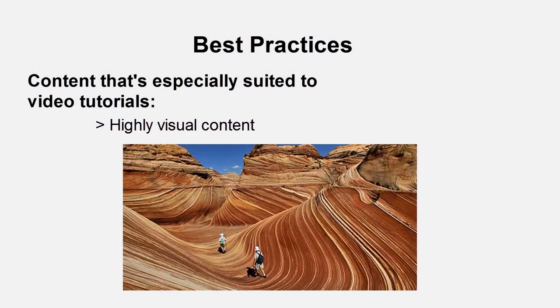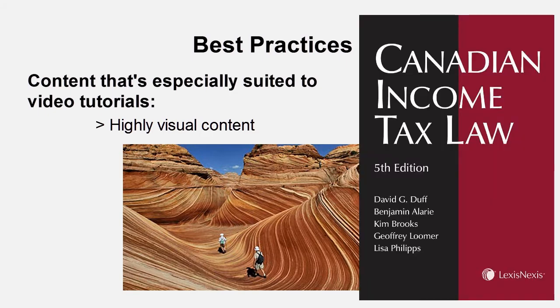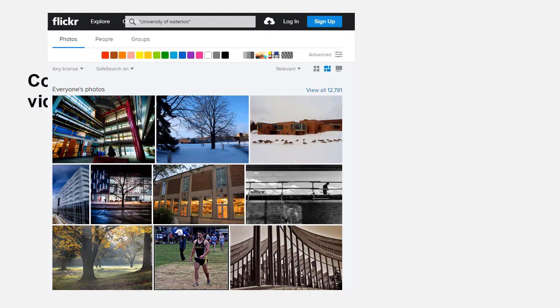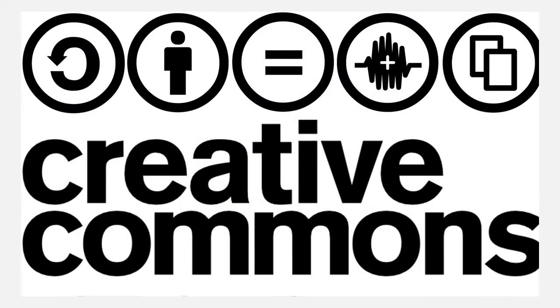Content that is highly visual in nature. For example, a presentation about different kinds of geological formations would probably lend itself to a video tutorial better than a presentation about tax law. If you want to find images that you can freely use, you can do so at several online sites, including Flickr. Just search for images with a Creative Commons license.